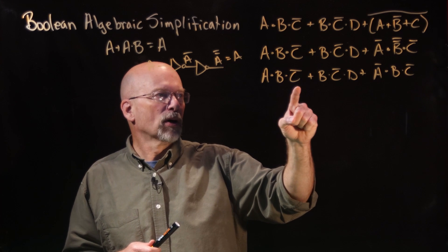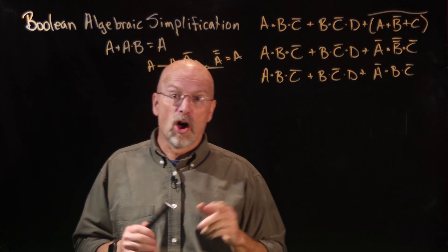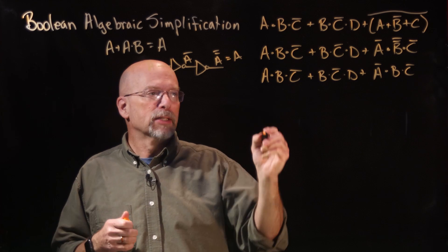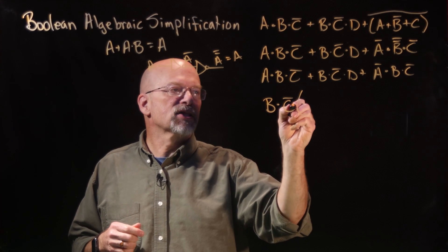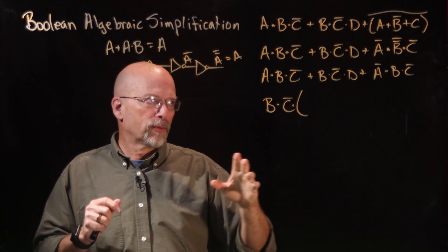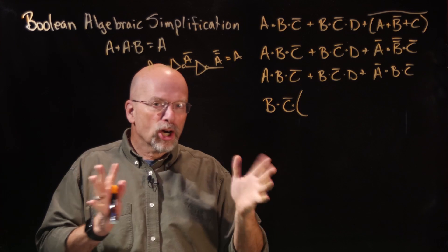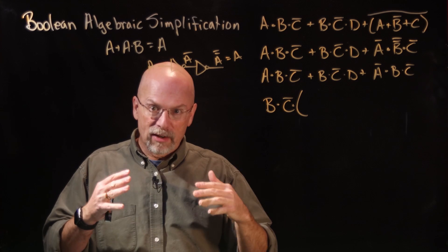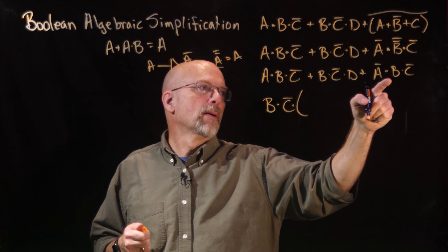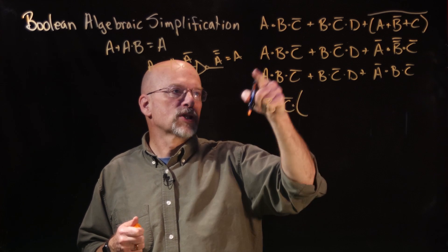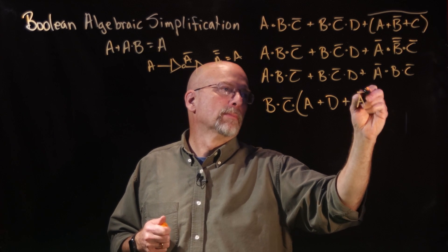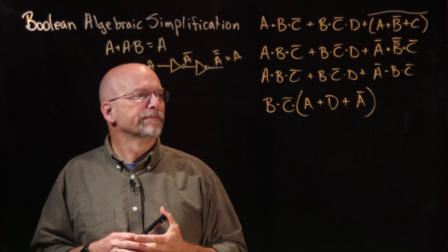Now it may be a little clearer what simplification needs to be performed. We have B·C-bar in all three of those products. That means we can use the distributive law in reverse to pull out B·C-bar. If it exists in all elements, I can factor it out. The inputs have to be the same — so if any inverter were different, we couldn't do it. Pulling B·C-bar out of all three terms: what's left in the first term is A, in the second is D, and in the third is A-bar.